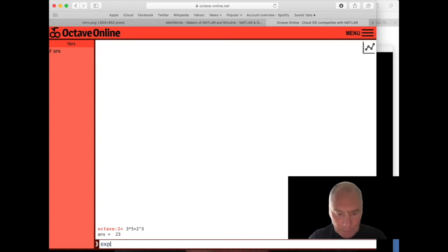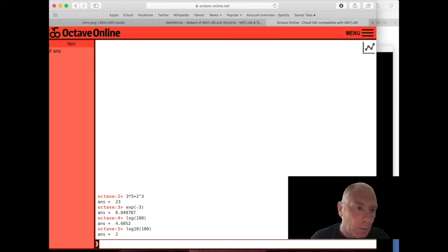We can do exponentials, e to the power minus 3. We can do logarithms, log of 100. That's the natural logarithm. You might have seen it written as ln. ln 100. In MATLAB and in Octave we write log. We can do logs to the base 10 and we can ask log base 10 of 100, hit return and the answer is 2. Of course because log to base 10 of 100 is the same as saying that 10 squared equals 100.